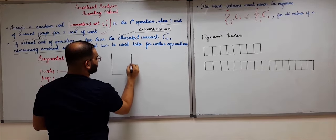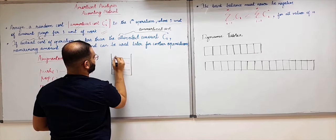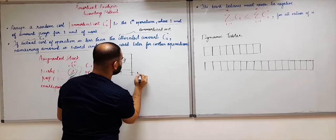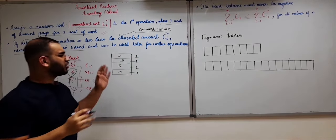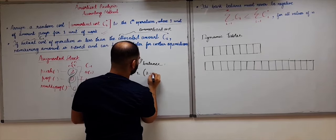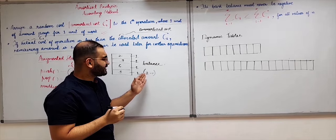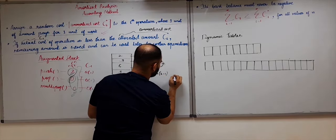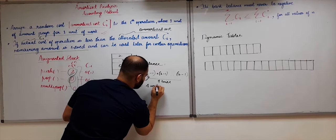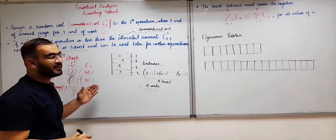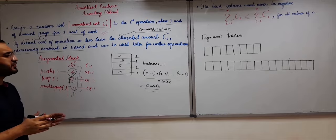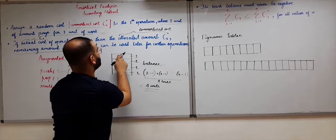If we make 4 pushes — 3, 6, 9, 2 — and the amortized cost ci-cap for push is assigned as 2 units, whereas each push actually takes only 1 unit, the balance after all four operations will be 4 units (2 minus 1, four times). These 4 units of balance can be used for pop and multipop operations, for which I have assigned 0 units but they require at least 1 unit each.